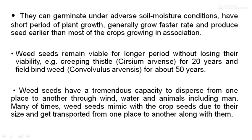Weeds have different life cycles — some are biennial, some are annual, and some are perennial. Some weeds have a short life cycle, meaning fast-growing habit and producing a number of seeds within a short period. Weed seeds remain viable for a longer period without losing their viability. For example, creeping crystals remain viable for 20 years and field bindweed (Convolvulus arvensis) seeds for about 50 years.